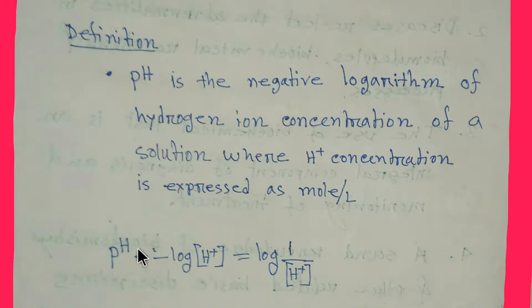However, what is pH? pH is the negative logarithm of hydrogen ion concentration. Bracket indicates the concentration of hydrogen ion. pH is the negative logarithm of hydrogen ion concentration of a solution, and this concentration is expressed as mole per liter.